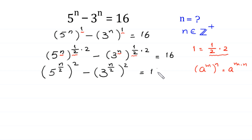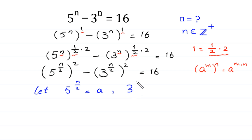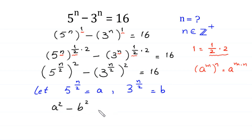Now we let 5 to the power n over 2 equal to a, and 3 to the power n over 2 equal to b. Substituting a and b into the equation, it becomes a squared minus b squared is equal to 16.